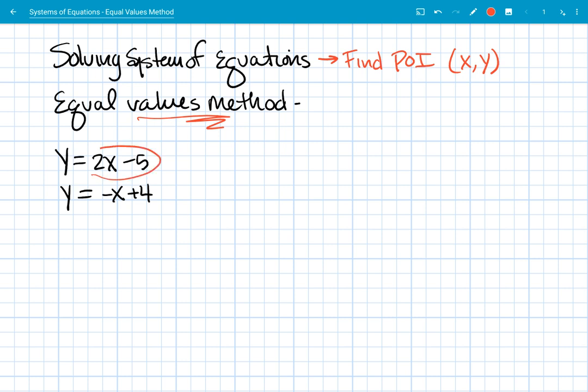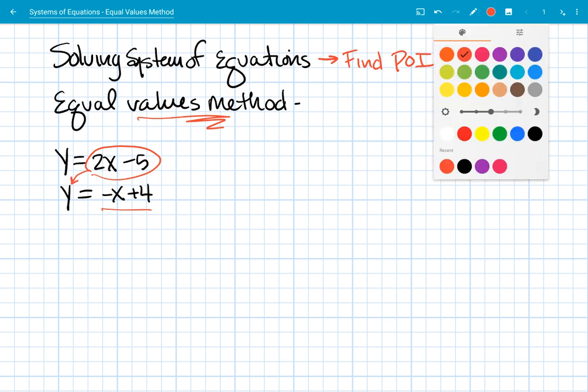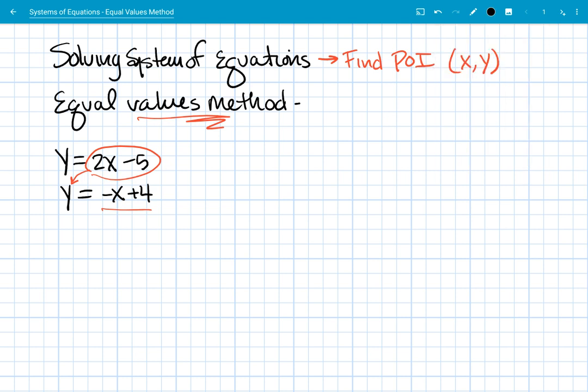And the idea is this: since this quantity is equal to y and the bottom quantity is also equal to y, if I replace this y with the top quantity, it makes a true equation. Because those quantities both equal y, we can set them equal to each other. So 2x minus 5 equals the opposite of x plus 4. And if we solve that equation, we'll get the x value of the point of intersection.